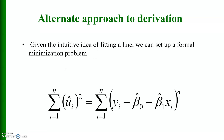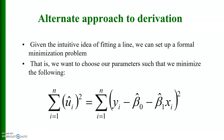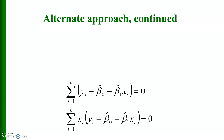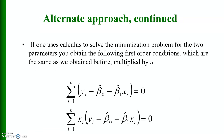Given the intuitive idea of fitting a line, we set up a formal minimization problem: choose parameters to minimize the sum of squared residuals, Σ u_i_hat² = Σ(y_i - beta_naught_hat - beta_1_hat * x_i)². Using calculus to solve this minimization problem for the two parameters, we obtain first-order conditions which are the same as obtained before, multiplied by n.